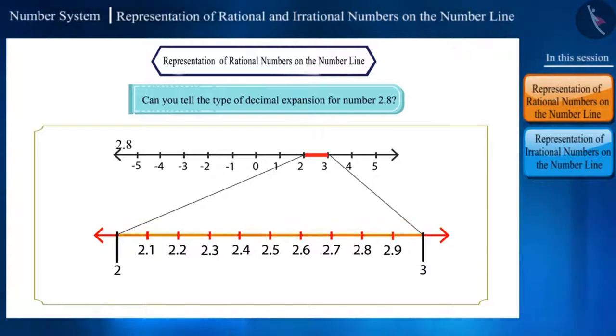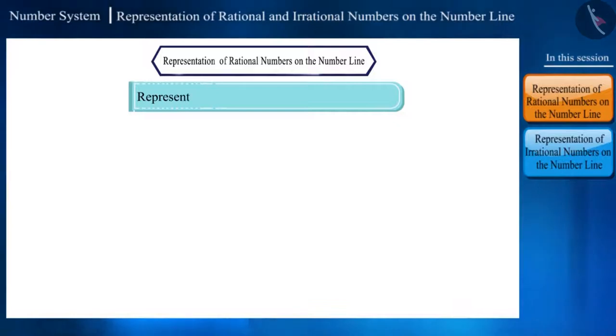Friends, why 10 equal parts? Because this will make the process of locating the number easy. Here, the first number is 2.1, the second is 2.2 and in this way the last number 2.9. And the number 2.8 will be located here only. Let's take one more example.